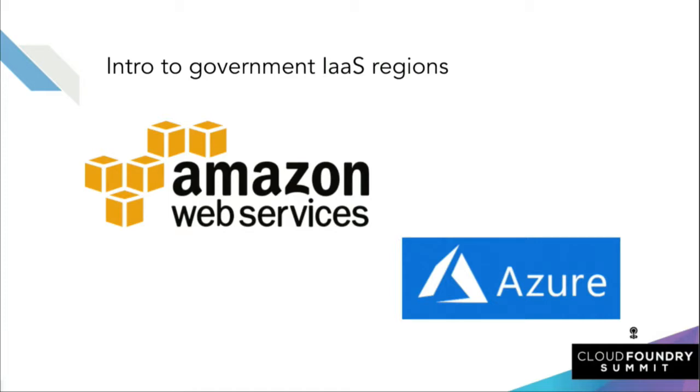If you want to start using a public cloud IaaS that is FedRAMP compliant or DISA compliant, there are right now only two you can choose from: AWS GovCloud and Azure Government. The Amazon public cloud is also FedRAMP, but at a lower level — FedRAMP moderate for other AWS regions versus FedRAMP high for AWS GovCloud only.